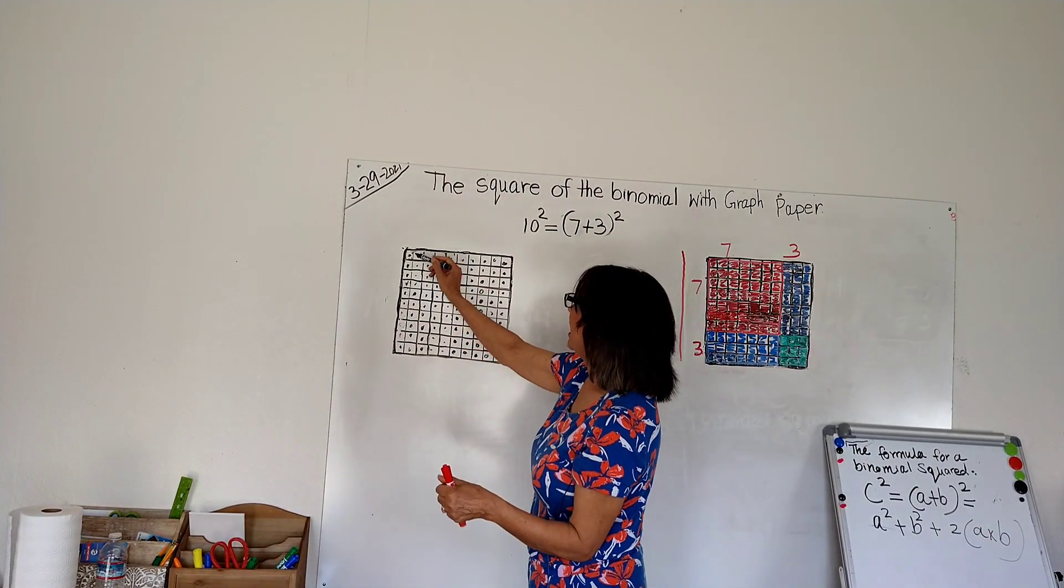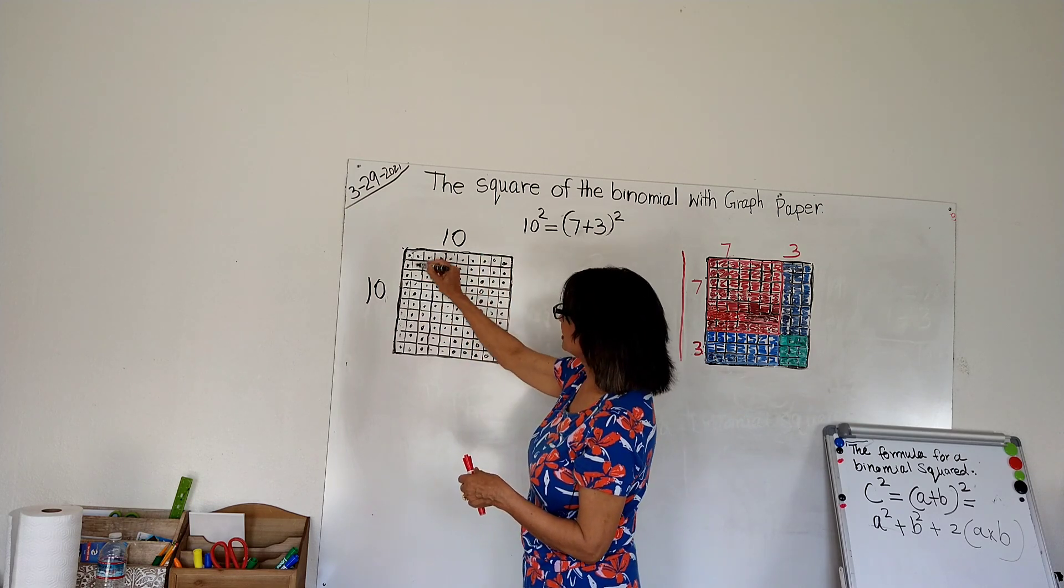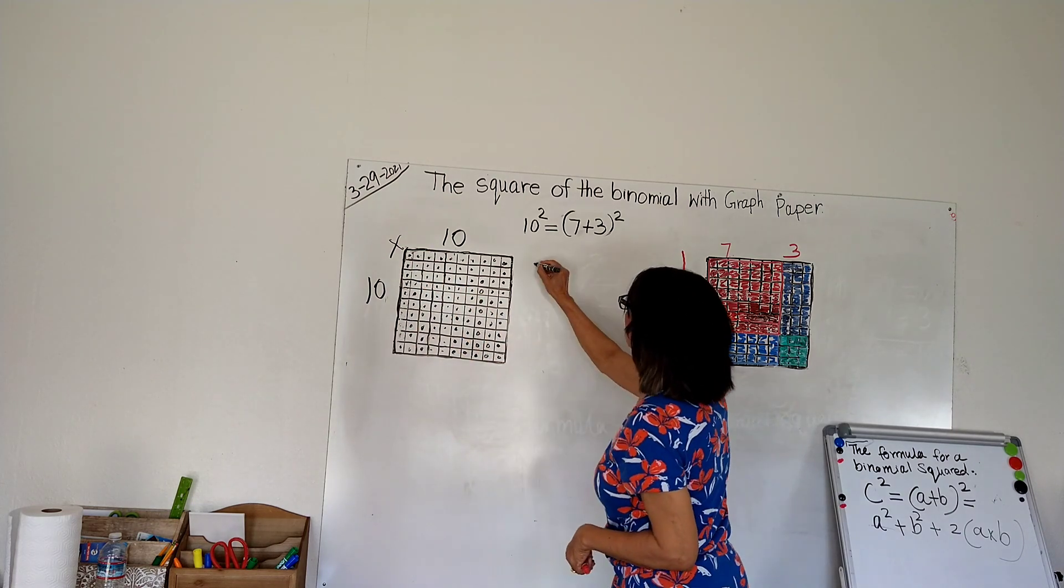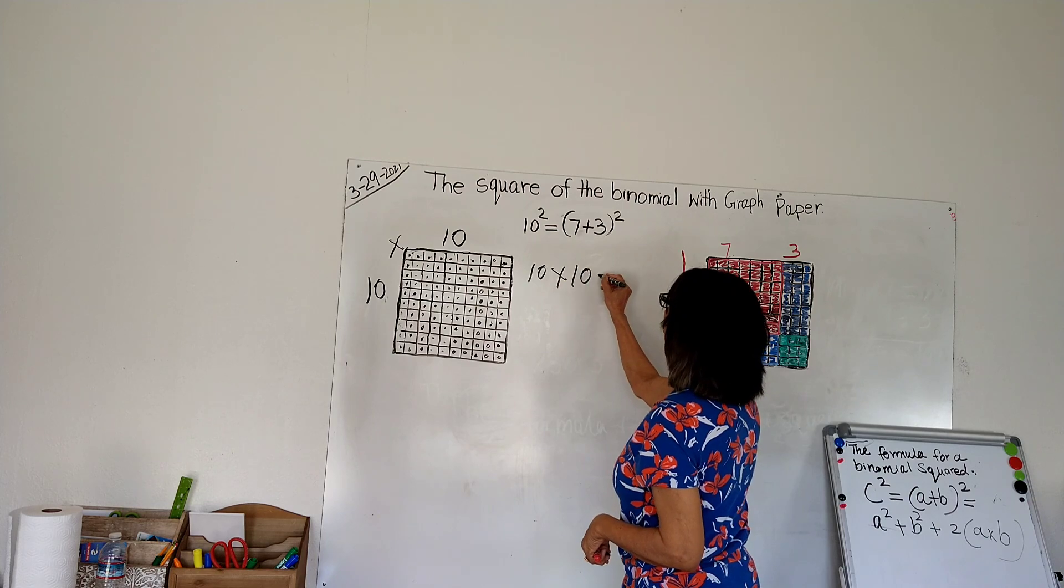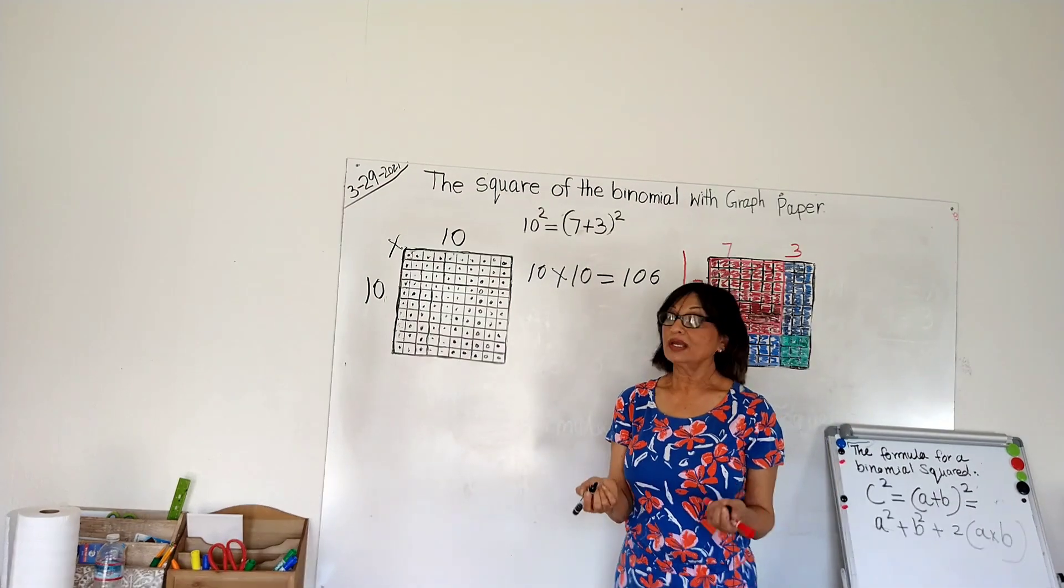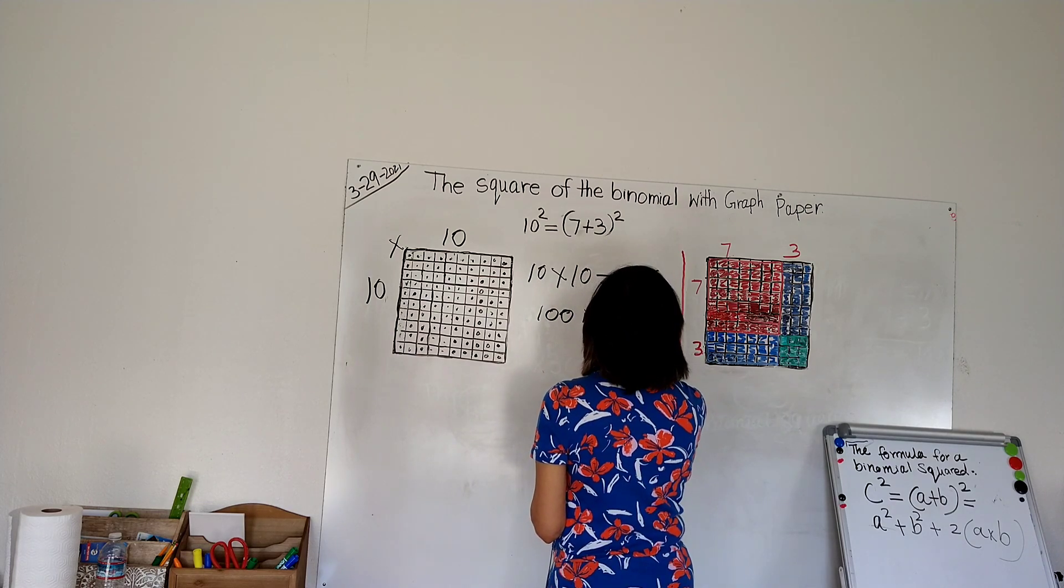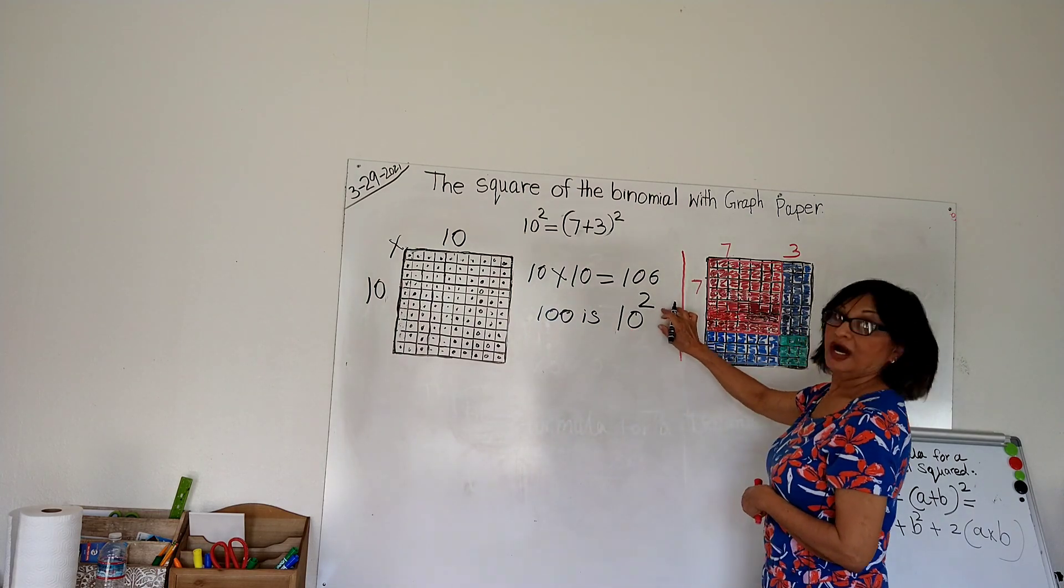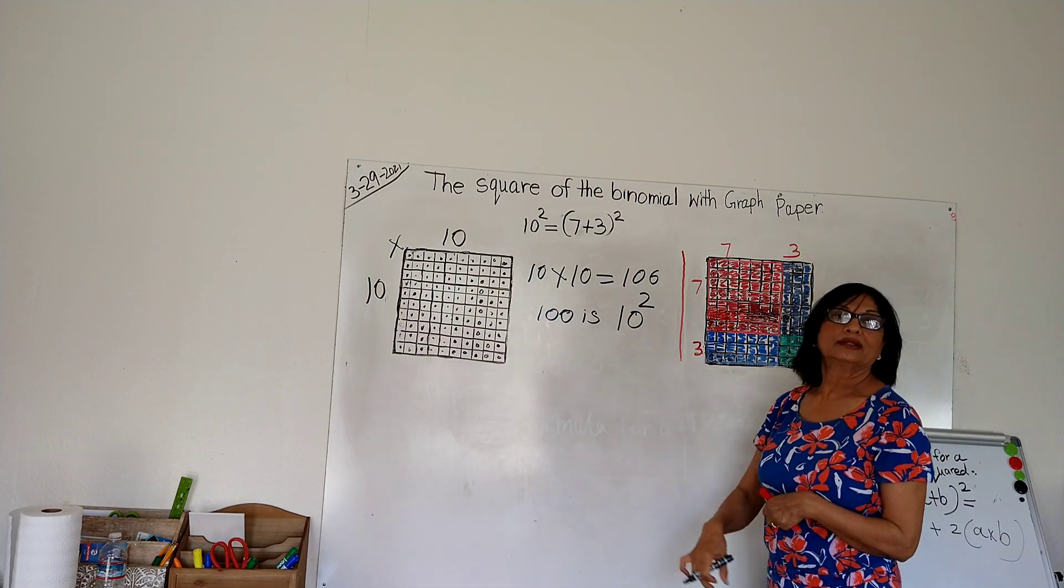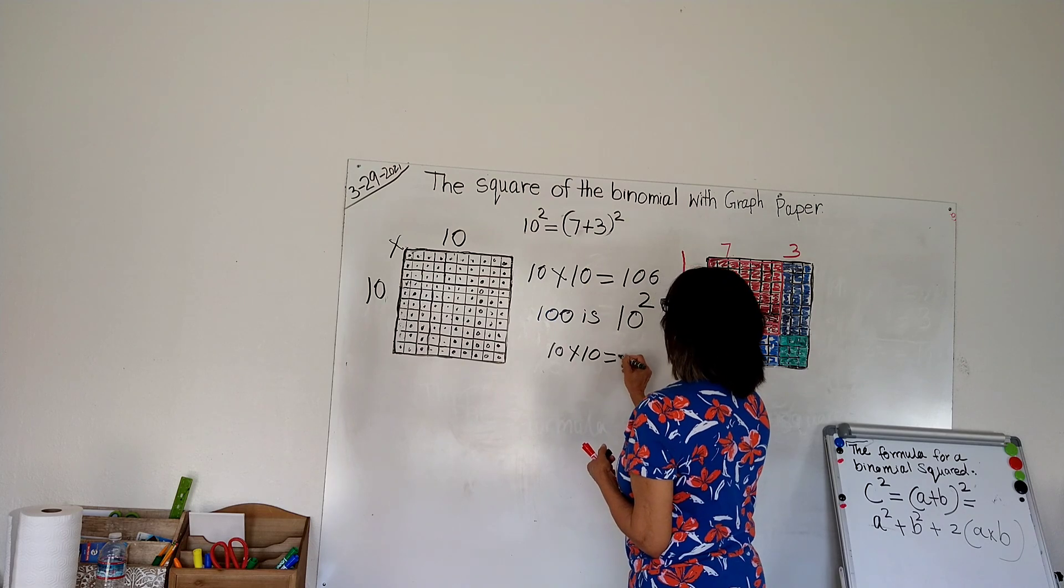I'm going to show you 10 across and 10 down. 10 across and 10 down. So I'm going to put a multiplication sign here: 10 times 10. 10 times 10 is 100. Another way of writing 100 is 10 squared. This raised number is called an exponent, so it means multiply the number by itself.